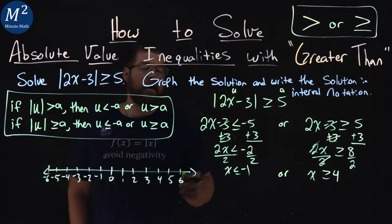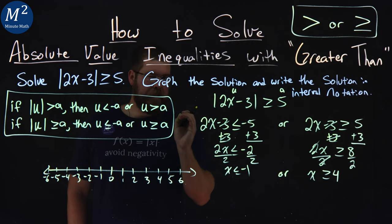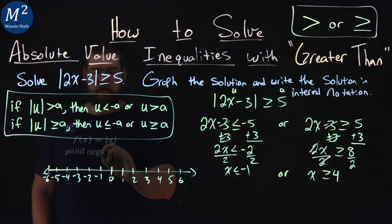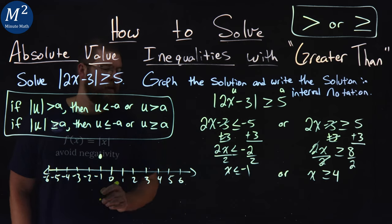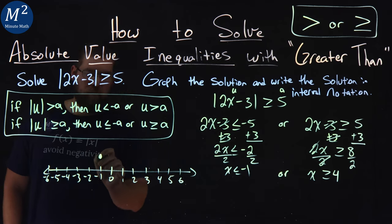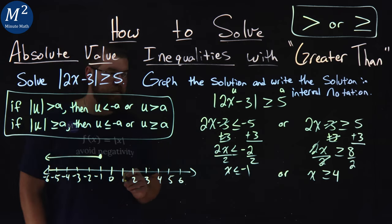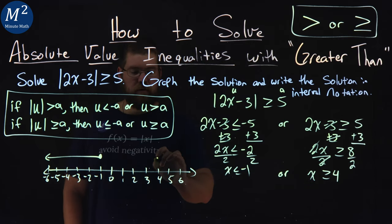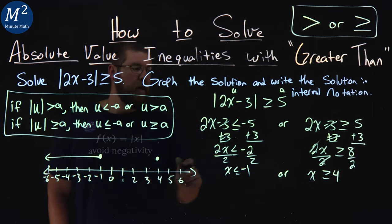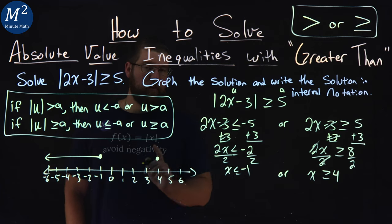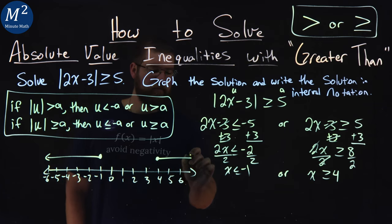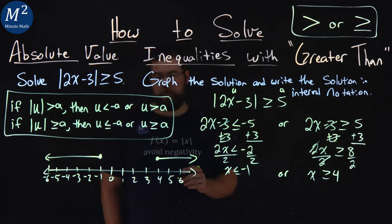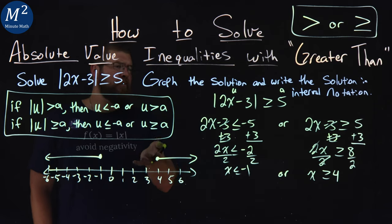So first one, x is less than or equal to negative 1. It can equal negative 1, so we put a closed circle right here at negative 1. And since it's less than negative 1, we put the arrow to the left. x is greater than or equal to positive 4. Same idea. Closed circle here at positive 4, and because it's equal to but we're greater than that, we put the arrow to the right. We have our graph here.